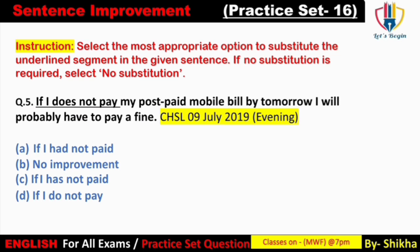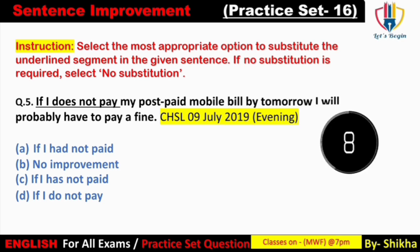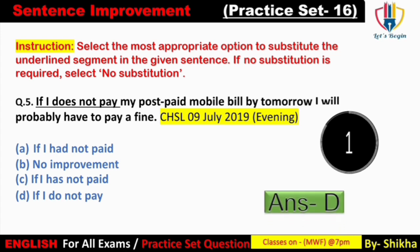Next: 'If I does not pay my post paid mobile bill by tomorrow, I will probably have to pay a fine.' Yeh sentence first conditional sentence ke upar banega — 'if' ke saath wala sentence simple present tense mein, aur uske baad wala simple future form mein. 'I does' galat hai — 'does' ka use third person singular number ke saath hota hai; 'I' ke saath 'do' use hota hai. Option A mein 'if I had' — past form, galat. Option C mein 'if I has not paid' — 'I' ke saath 'has' bhi nahi hota. Answer: option D — 'If I do not pay.'